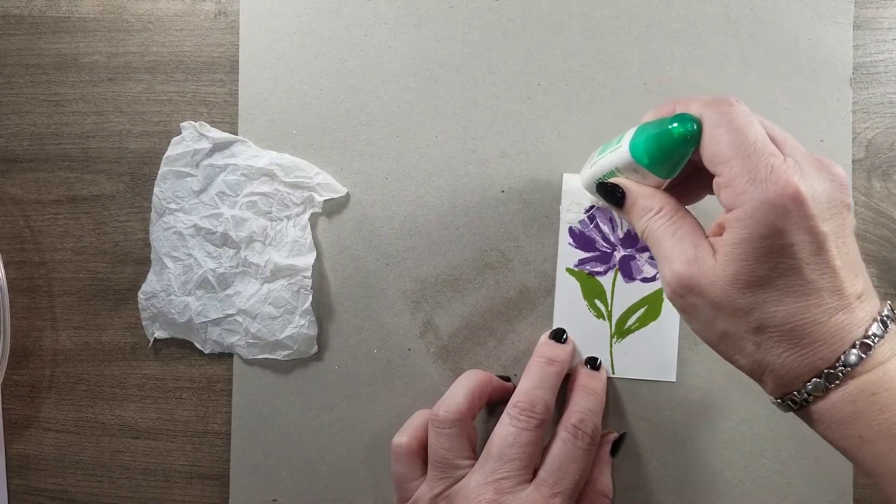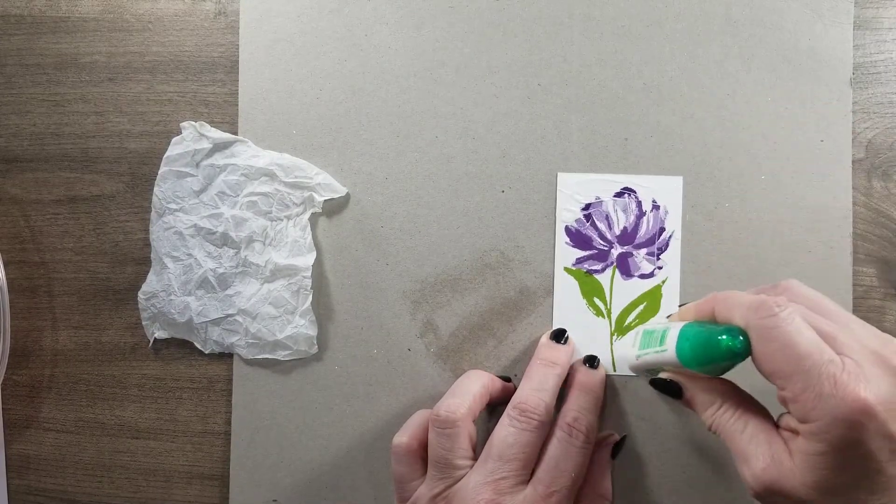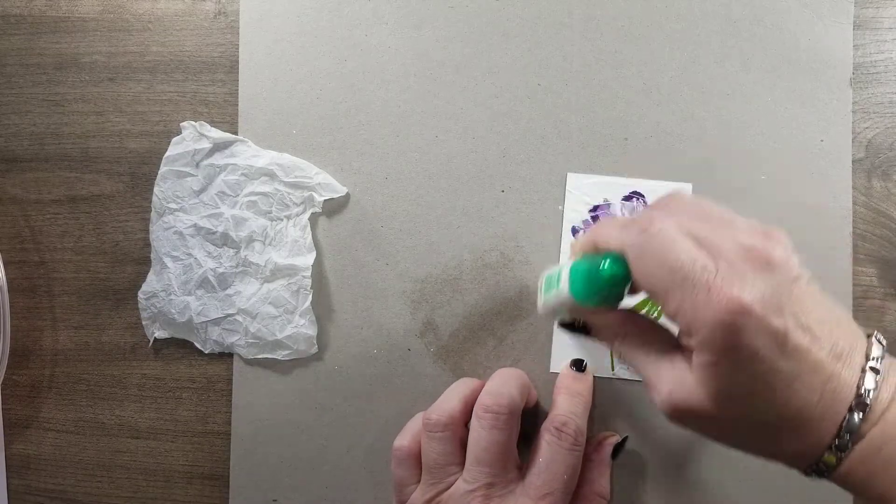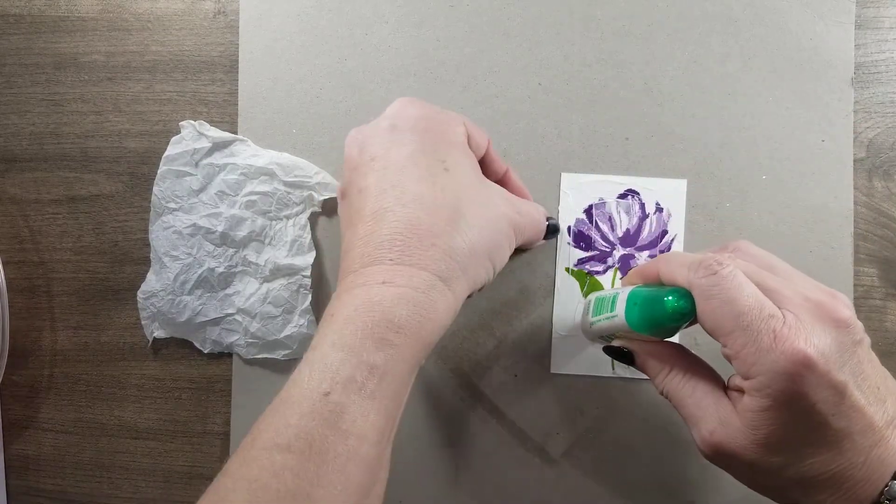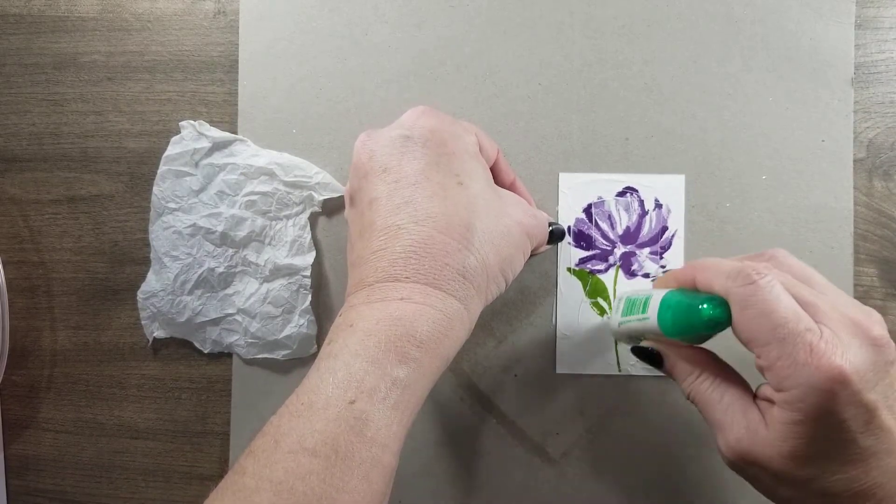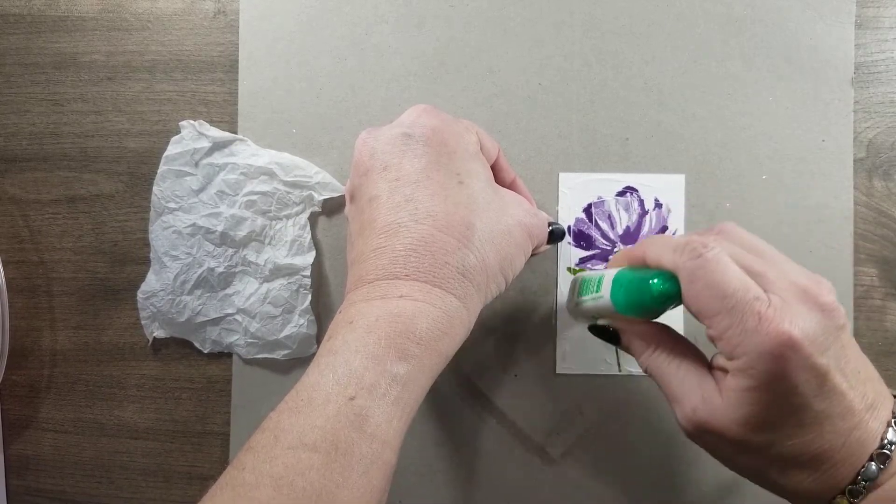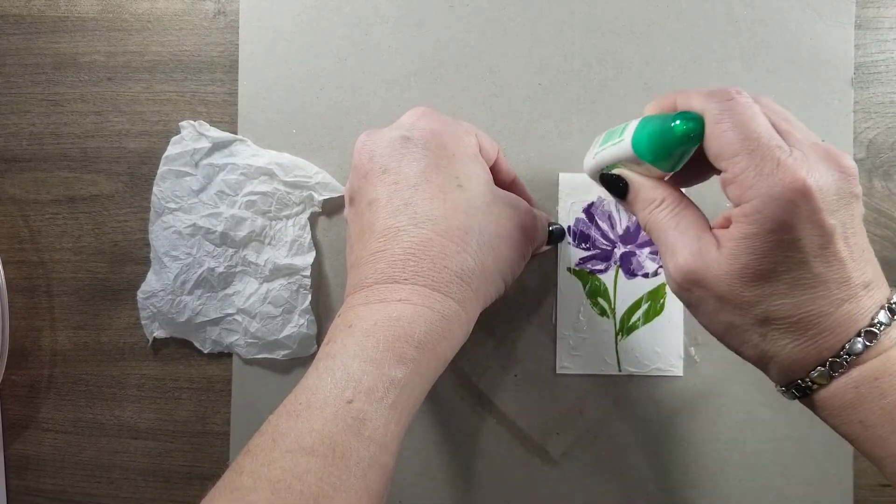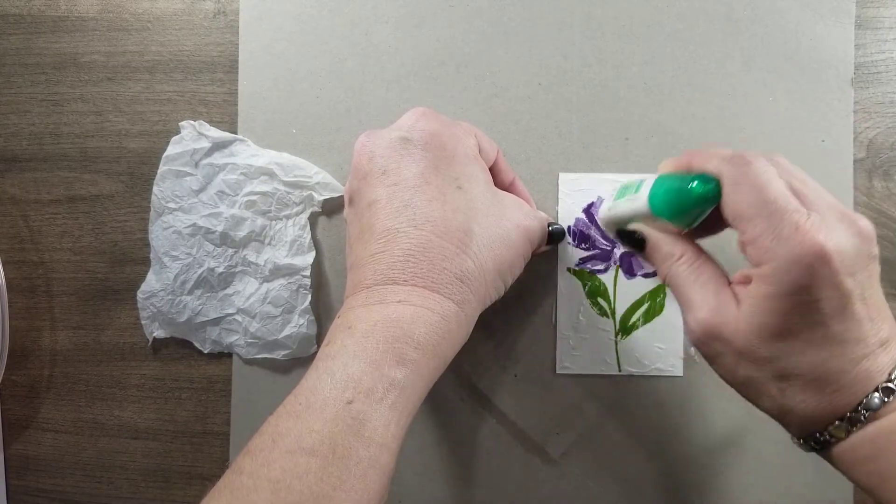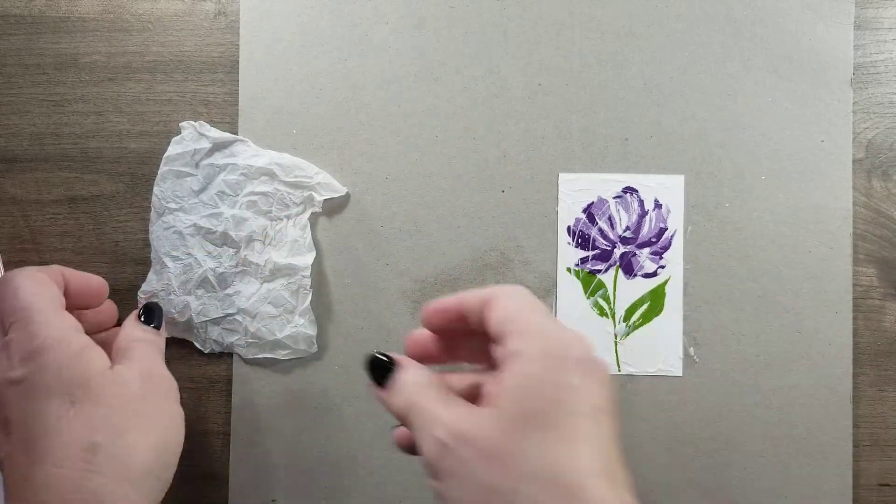We're going to get our glue started. I'm putting glue all over, making sure it's on the sides so it grabs the paper. I always put scrap paper underneath so I don't get glue on my work surface and it sticks to my card.